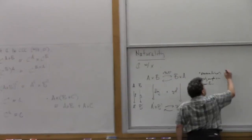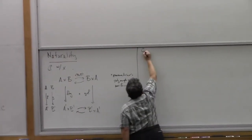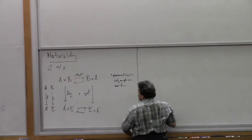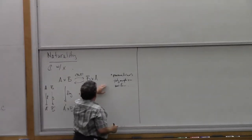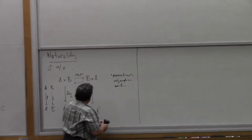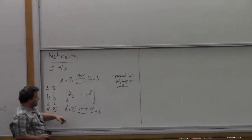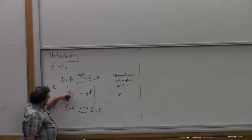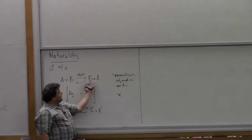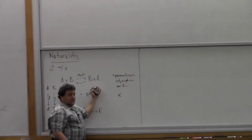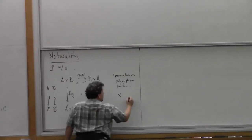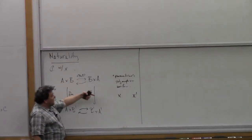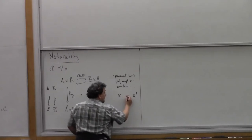Let's look at the general case — the general definition. What's really happening is this is a functor in two arguments: it's the product functor. And this is another functor in two arguments: it's the twisted product functor. It takes the first argument and puts it in the second place. And now what we're saying is these two functors are isomorphic as functors.